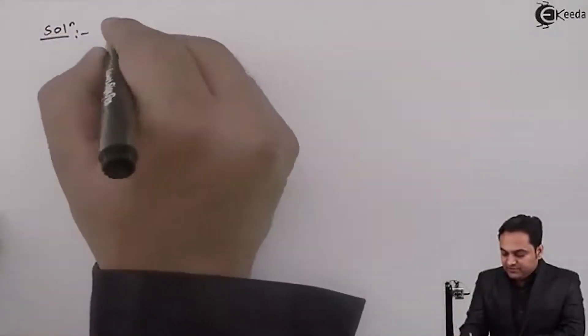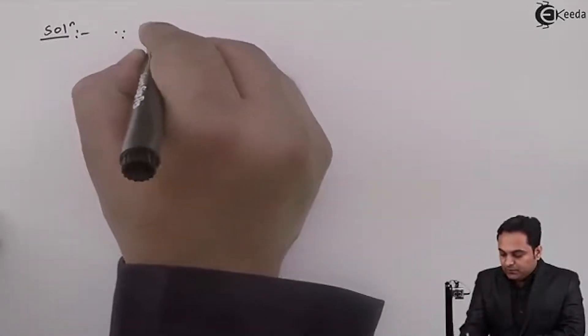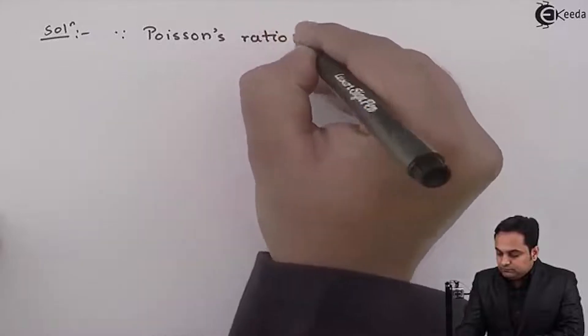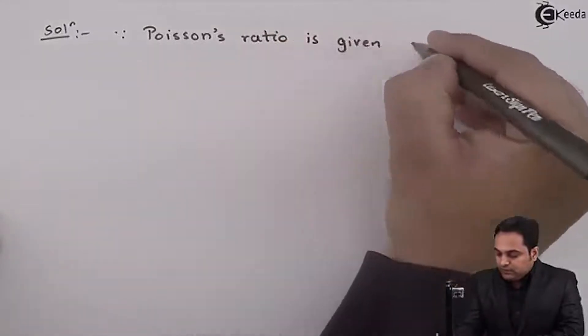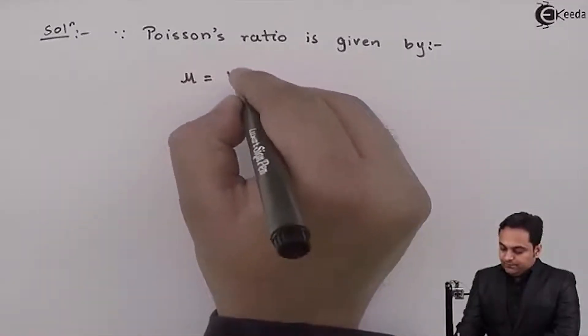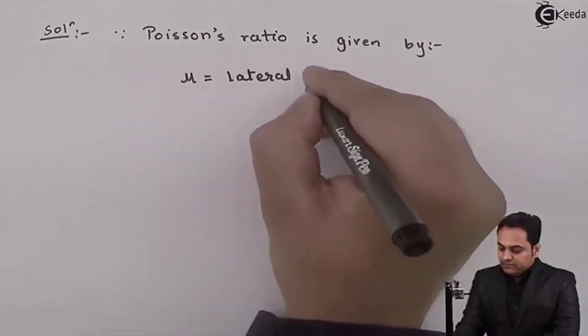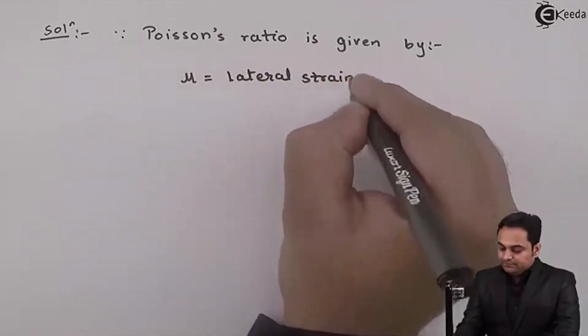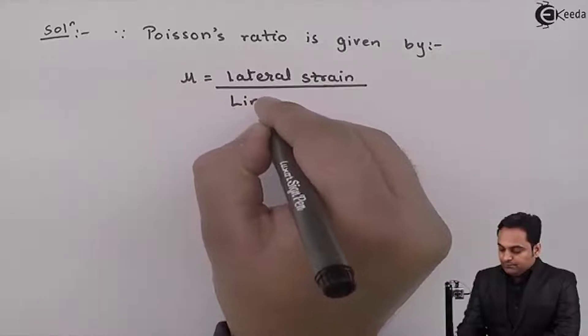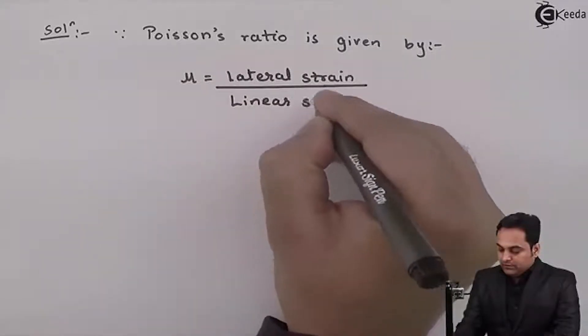In the solution, we can start by noting that Poisson's ratio is given by mu equals lateral strain upon linear strain.